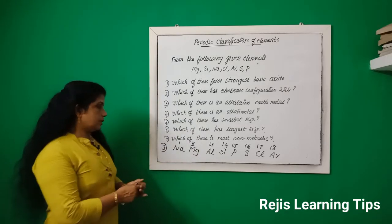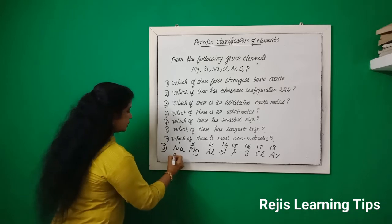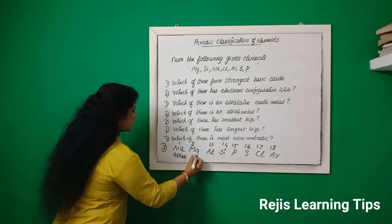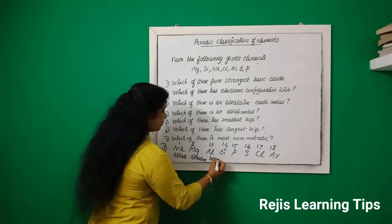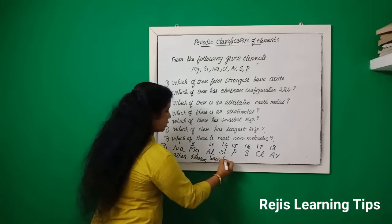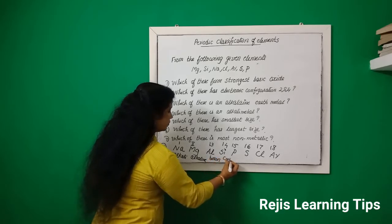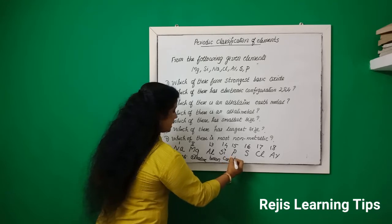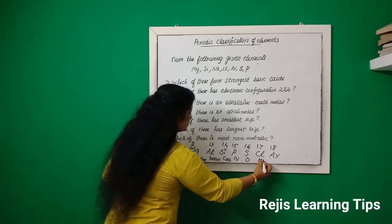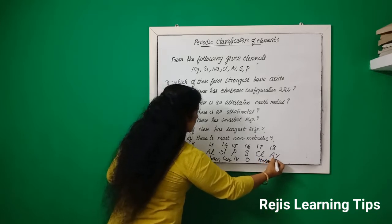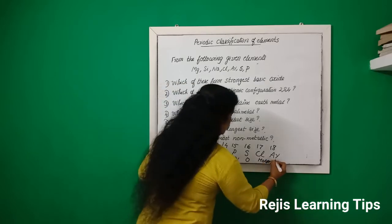Alkali metals are the first group, alkaline earth metals are the second group, boron family is the 13th group, carbon family is the 14th group, nitrogen family is the 15th group, oxygen family is the 16th group, halogen family is the 17th group, and noble gases are the 18th group.